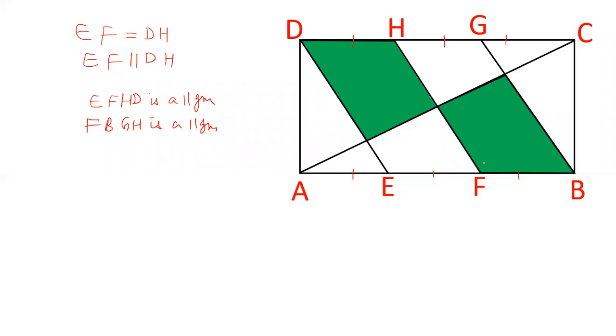So DA is parallel to HF and parallel to GB. This we can say. DA is parallel to HF is parallel to GB. Now using this particular value or property we will solve this question.